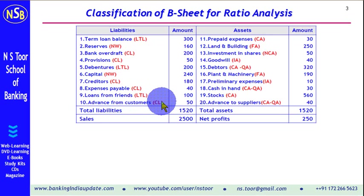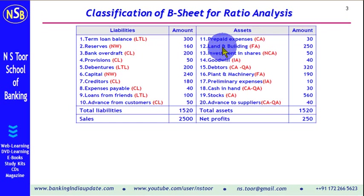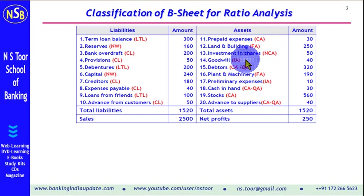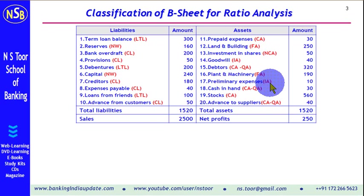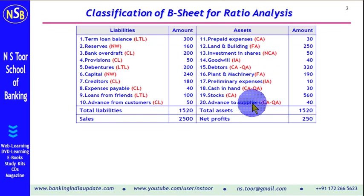On the asset side: advance from customers is a current liability; prepaid expenses are a current asset; land and building are fixed assets; investment in shares are non-current assets; goodwill is an intangible asset; debtors are current assets as well as quick assets; plant and machinery are fixed assets; preliminary expenses are intangible assets; cash in hand is a current asset and quick asset; stocks are current assets; and advances to suppliers are current assets as well as quick assets.